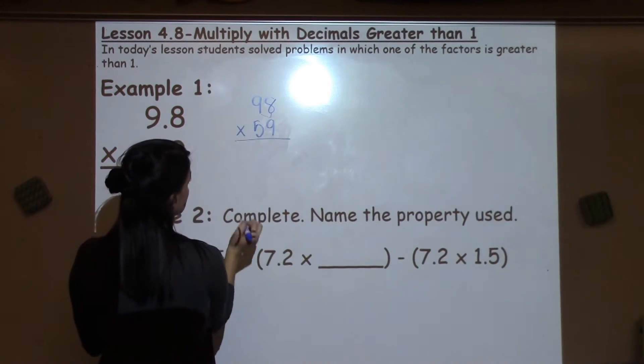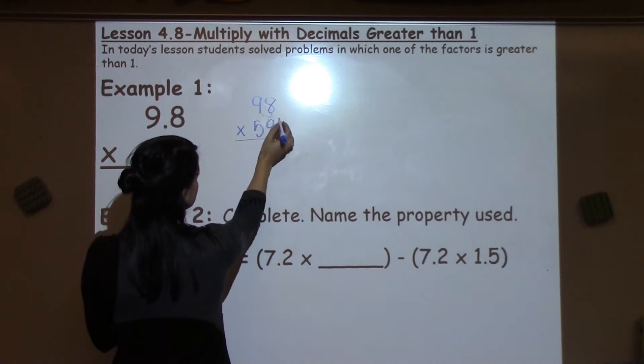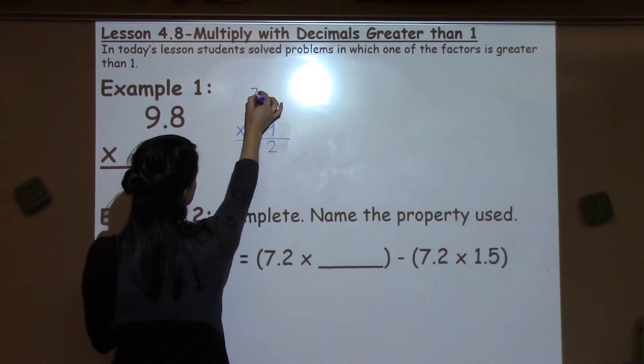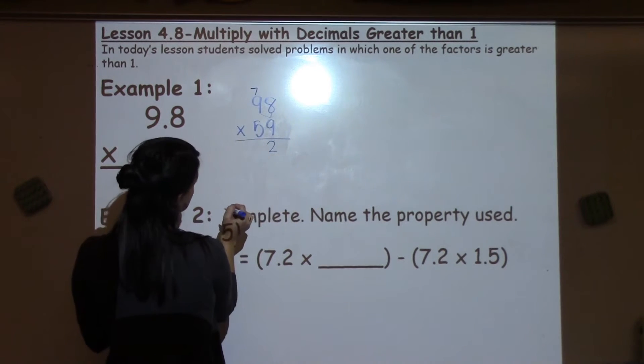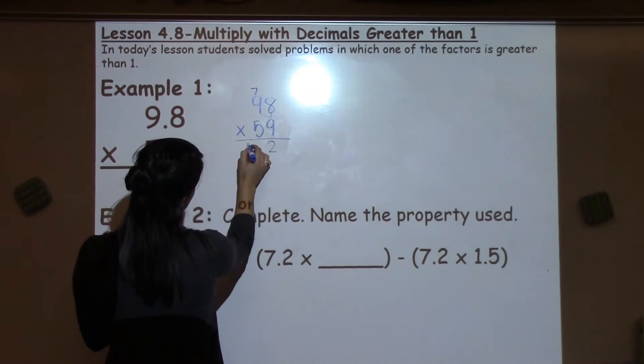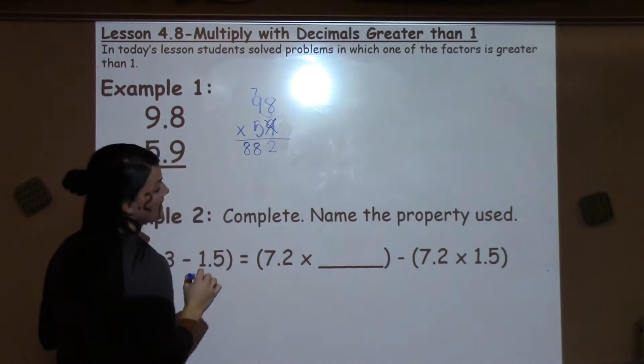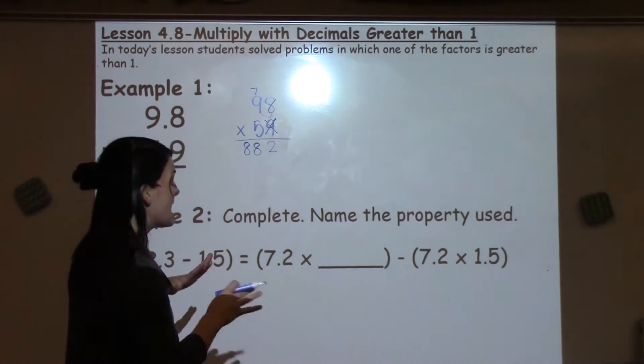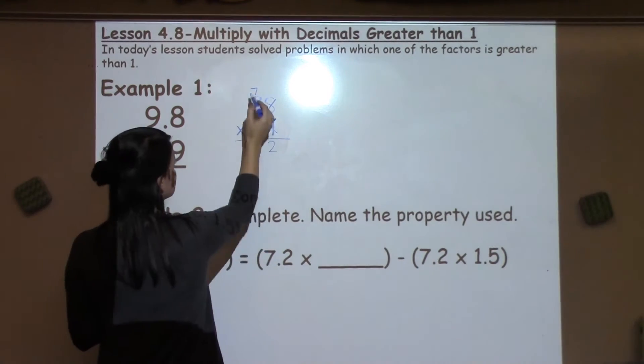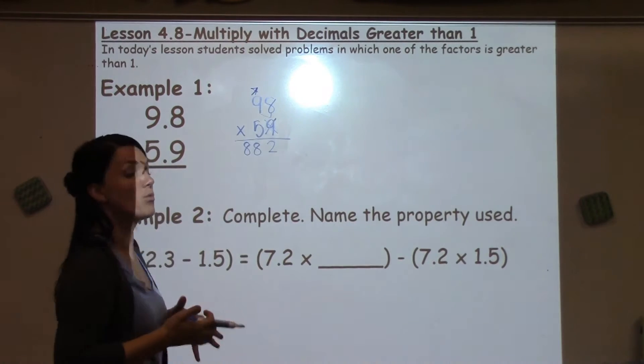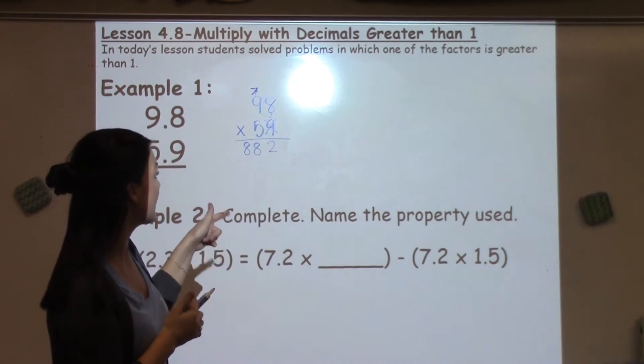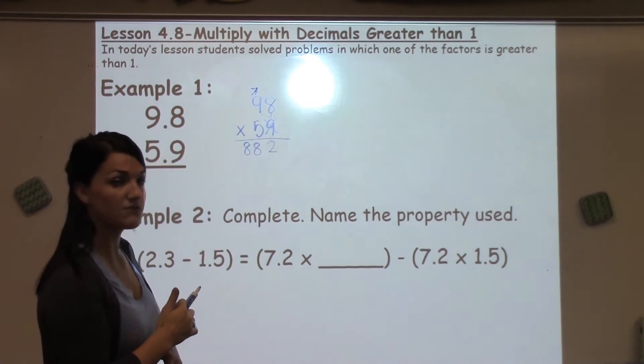I'll distribute the 9 to each of the top numbers before working with the 5. So I'm going to take 9 times 8, which is 72. 9 times 9, which is 81, plus 7, would be 88. Anytime I'm done working with one number, I exit out, and I also cross out anything else that went with it. This 7 was part of that multiplication of the 9.